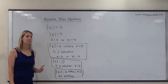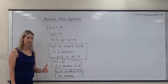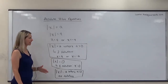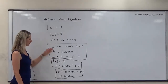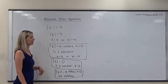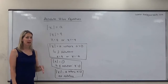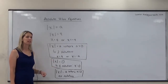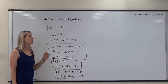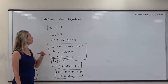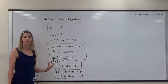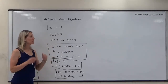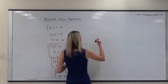When considering these three cases to determine the number of solutions, it's important that the absolute value is isolated first. If the absolute value is not by itself on one side of the equal sign, use inverse operations to move everything else to the other side.